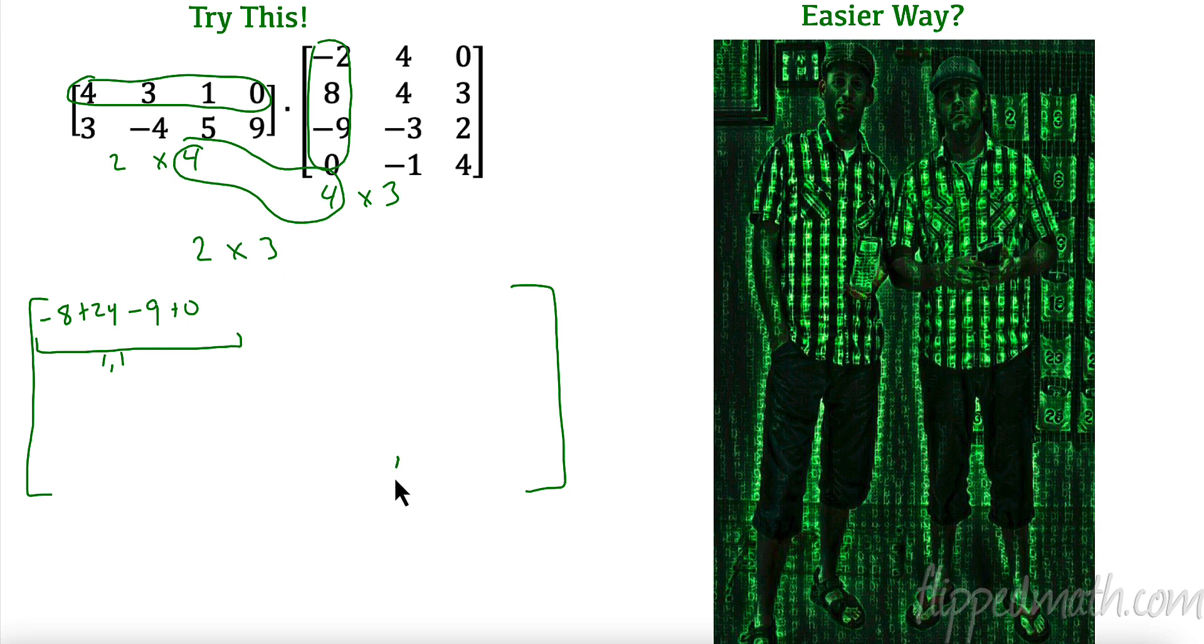Okay. Let's try down here. So this is second row, third column. So let's do second row. Because I'm going to erase this. Third column. All right. So 3 times 0 is 0. Negative 4 times 3 is negative 12. 5 times 2 is 10. 9 times 4 is 36. All right. So I've done 2. You need to find the others. 2, 1. 2, 2. All the rest. All right. So pause the video and do that on your own.